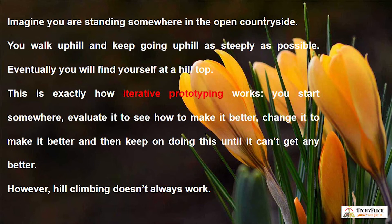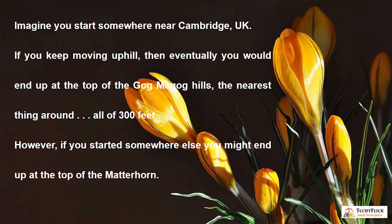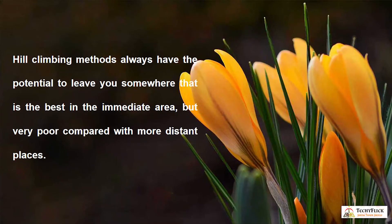However, hill climbing doesn't always work. Imagine you start somewhere near Cambridge, UK. If you keep moving uphill, you would end up at the top of the Gog Magog Hills — the nearest thing around — at all of 300 feet. However, if you started somewhere else, you might end up at the top of the Matterhorn. Hill climbing methods always have the potential to leave you somewhere that is the best in the immediate area, but very poor compared with more distant places.